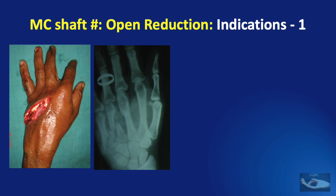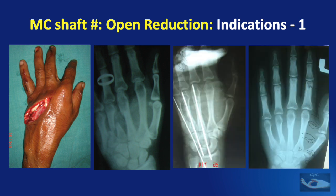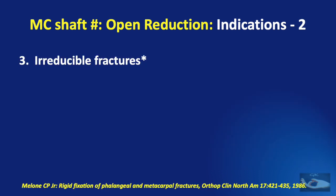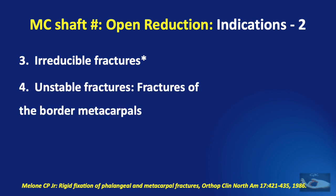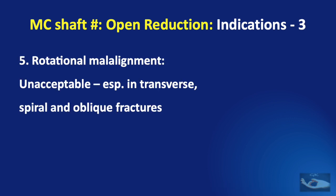It is easier to manage the wound, the associated soft tissue injuries, and the metacarpal shaft fractures by open reduction. If an attempt at closed reduction proves irreducible, that is also an indication for open reduction. Similarly, unstable fractures — that is, fractures of the border or marginal metacarpals — are indications for open reduction. Even the slightest rotational malalignment is an indication for open reduction, especially in transverse, spiral, and oblique fractures. Apparent shortening of the finger can be accepted up to 5 mm; beyond that, open reduction is indicated.